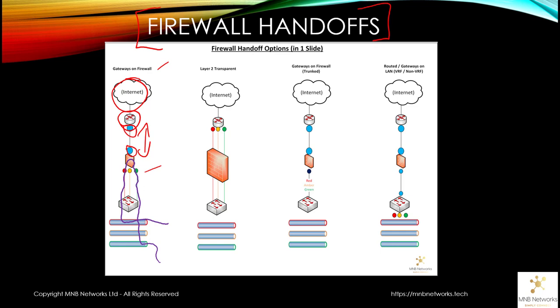If we move on to the next firewall to LAN handover technique, which is layer 2 transparent, we have a similar setup at the top with an internet or WAN connection and a router. This might be a CE router or a downstream router from the CE, possibly your core switch or a large core router.